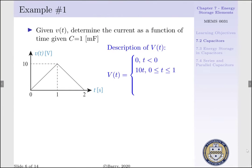In the time interval 0 to 1 seconds, our voltage is increasing linearly from 0 to 10 volts. That is, our voltage is equal to 10t.